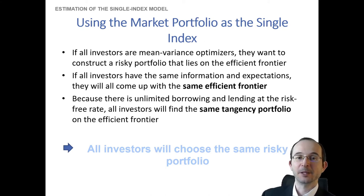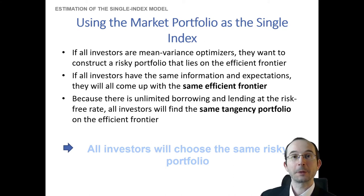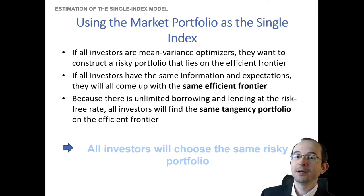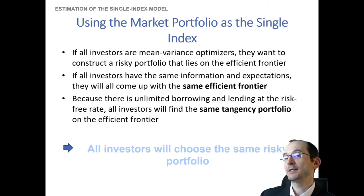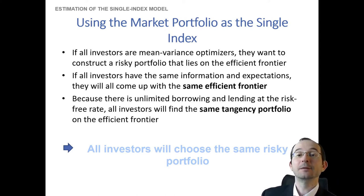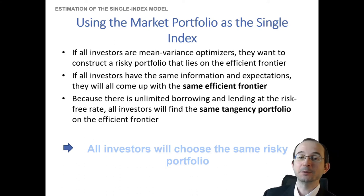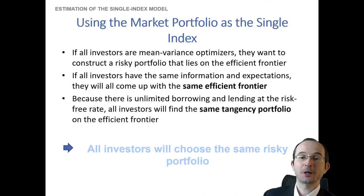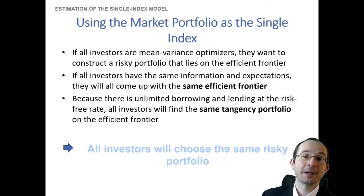If there's unlimited borrowing and lending at the risk-free rate, consistent with portfolio theory, then everybody's going to fall somewhere along that capital market line, holding some combination of the risk-free asset and that optimal risky asset — which will therefore be the market. Essentially, it'll be the assets that every portfolio that everybody holds. And if you add up the holdings of literally all investors in an economy, that must be the market portfolio, because there's nothing else remaining once we account for all risky assets that all investors hold.